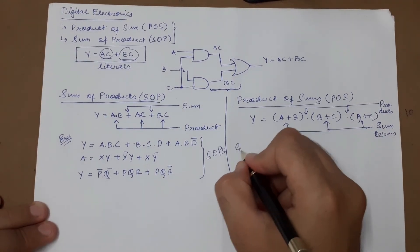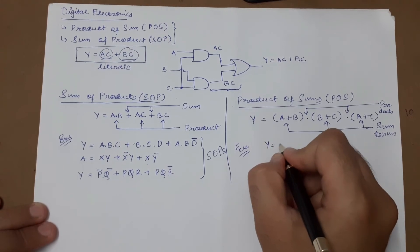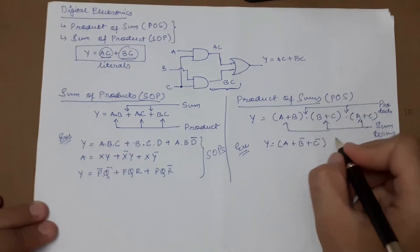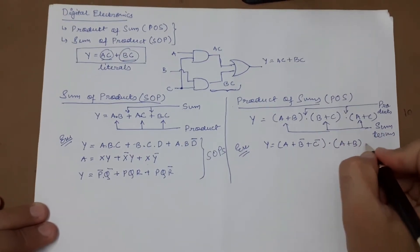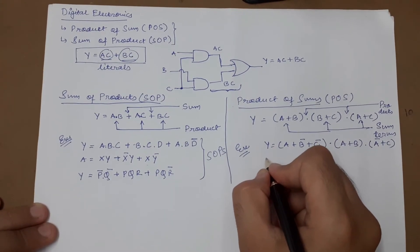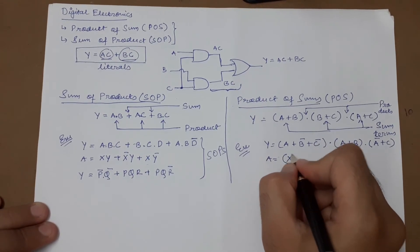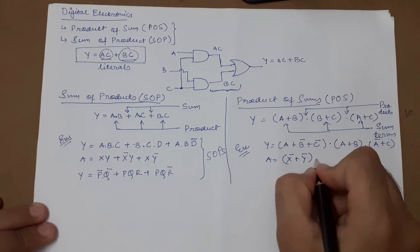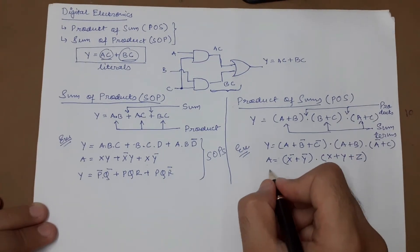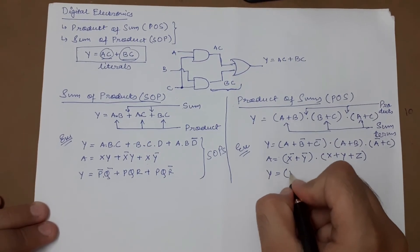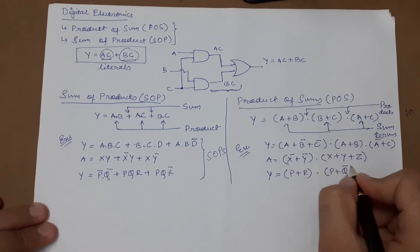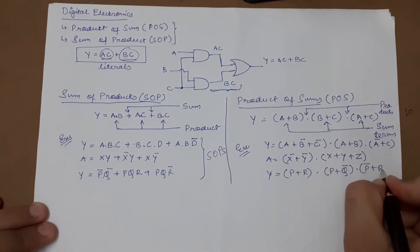For example, Y equals (A plus B̄ plus C̄) dot (Ā plus C) is a product of sum. A second example is (X̄ plus Ȳ) dot (X plus Y plus Z). A third example is Y equals (P plus R) dot (P plus Q̄) dot (P̄ plus R).